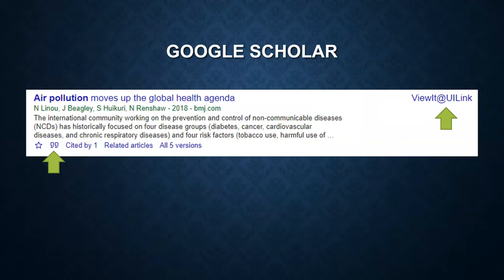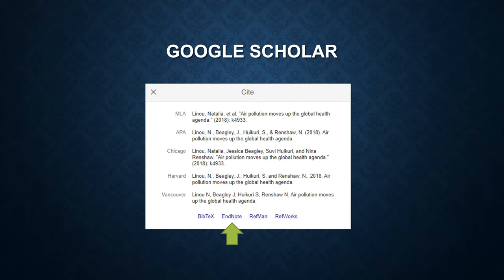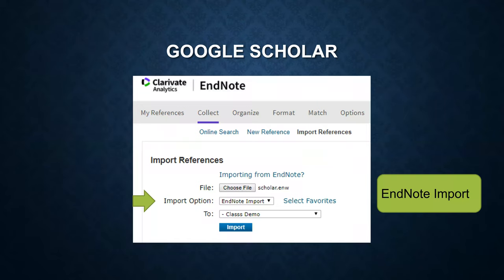Now, I'm going to show you how to import a record from Google Scholar. Click on the quotation mark icon. A pop-up window shows up — click on EndNote and switch back to your EndNote Basic account. It's the same process as we introduced: go to Collect, click on Import References, choose the file downloaded from Google Scholar, choose the import option for Google Scholar records, then choose the destination group — in this example, Class Demo. Click on Import to import the record from Google Scholar.